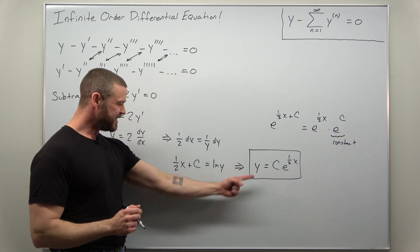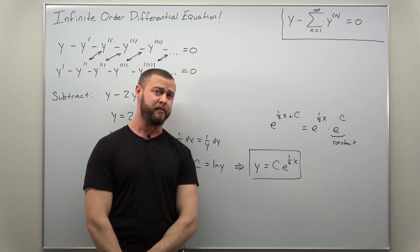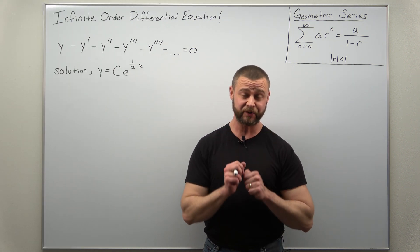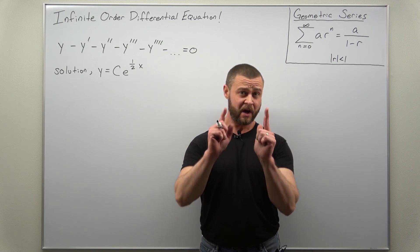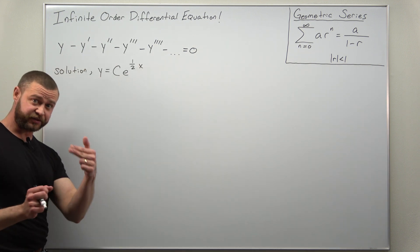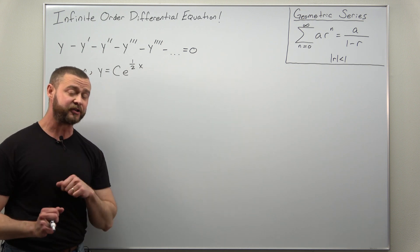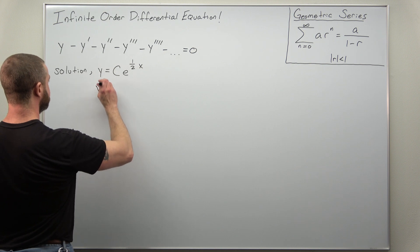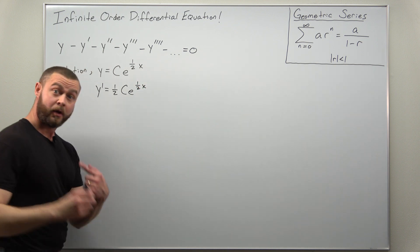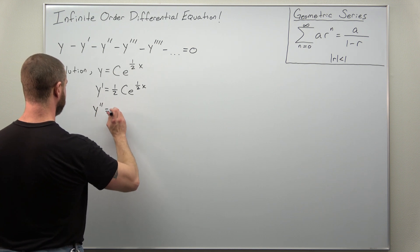That seems too easy — is this actually right? Let's go ahead and check. To show that c times e to the one half x is a solution to our infinite order differential equation, we need to calculate a few derivatives and hopefully observe a pattern. We only need the chain rule, and each time we differentiate, the chain rule gives us a factor of one half. The first derivative is one half times c e to the one half x. Differentiating again gives another factor of one half, so the second derivative is one fourth times c e to the one half x.